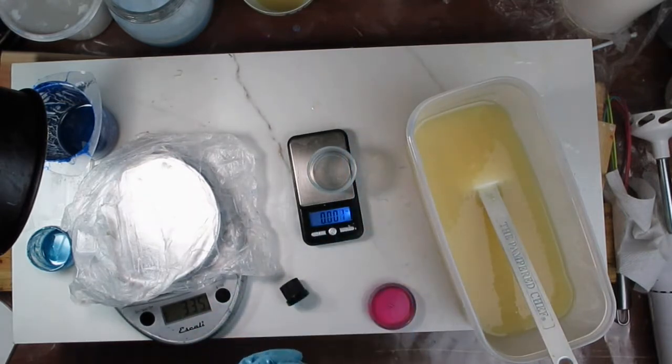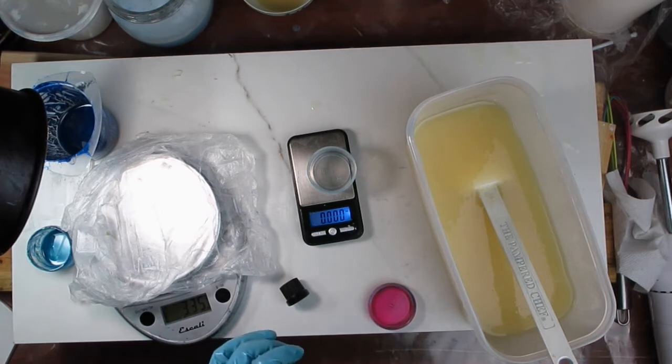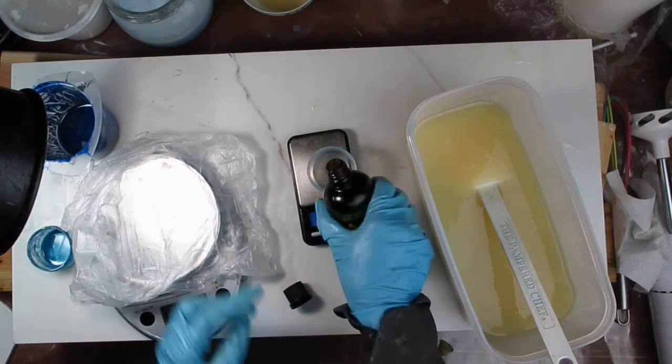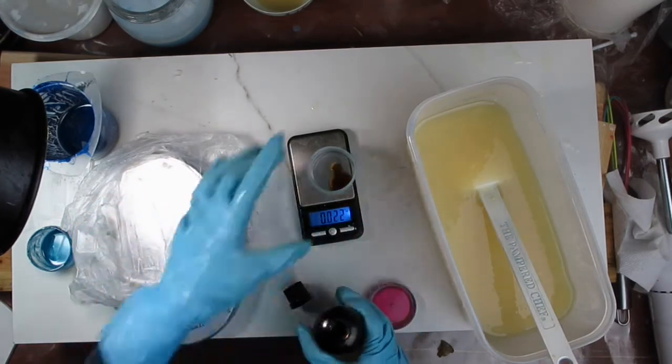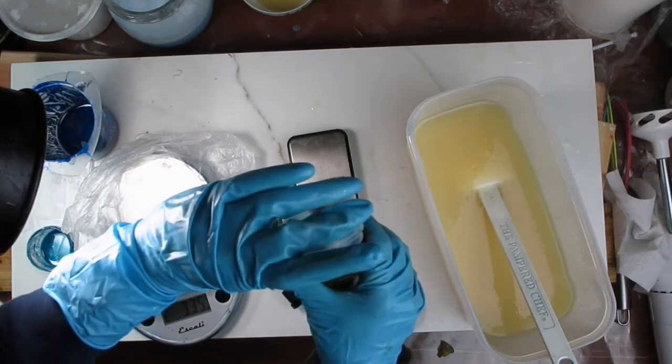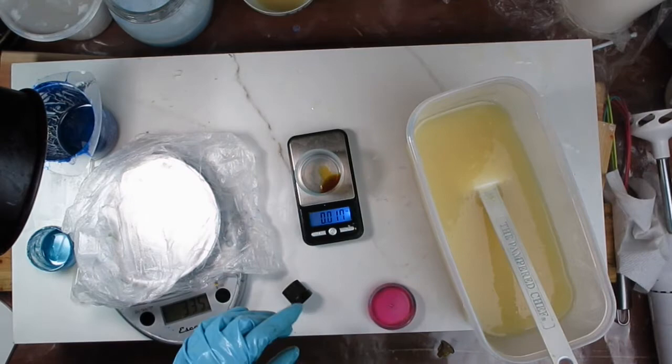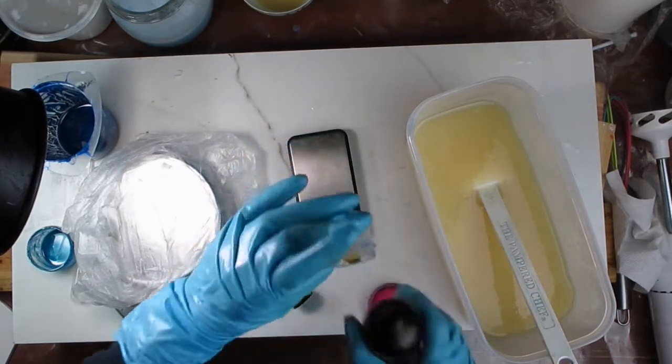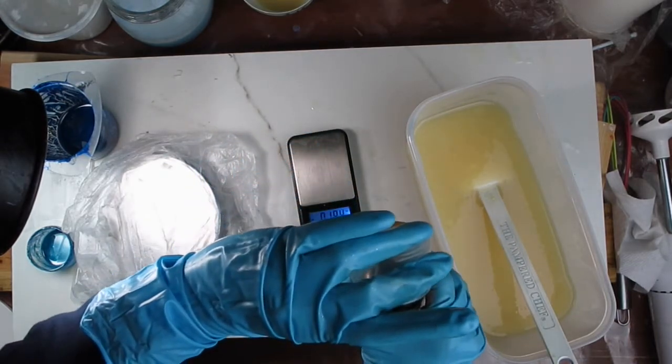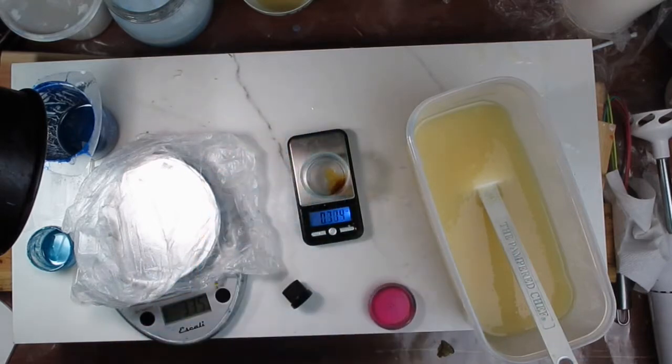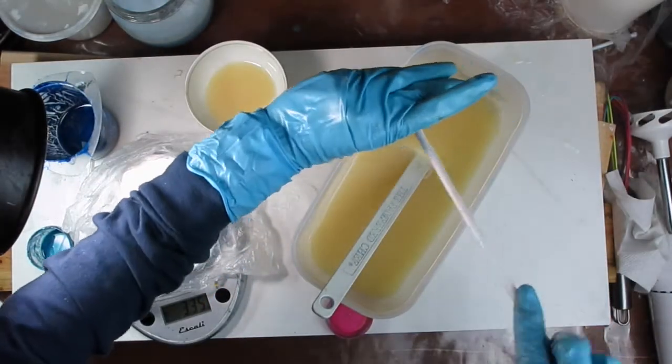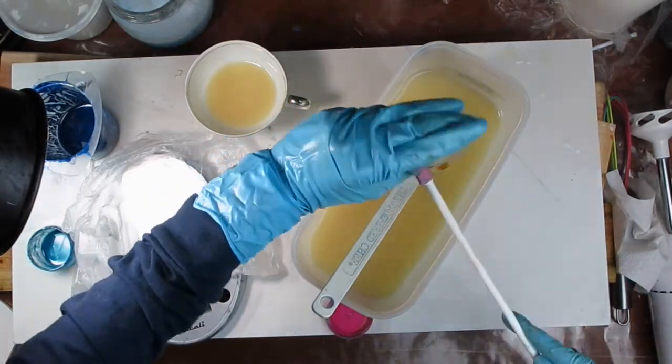Meanwhile I'm going to measure the rosemary oleoresin or ROE extract that I'm going to add to the soap. This is using very small amounts so small that I need to use a jeweler's scale to measure it. It's about 0.05% of the total mix that needs to be used and it helps in preventing oxidation from the oils which in turn helps prevent dreaded orange spots or DOS.